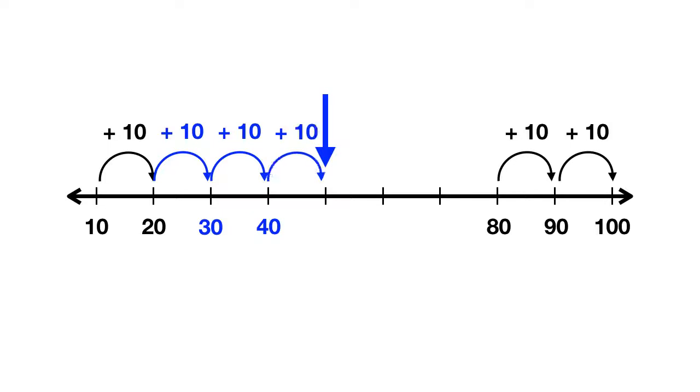And then we can move from the 40, add 10. Now we're at 50. And look, we made it to our arrow. We can tell that this arrow was pointing at the number 50.